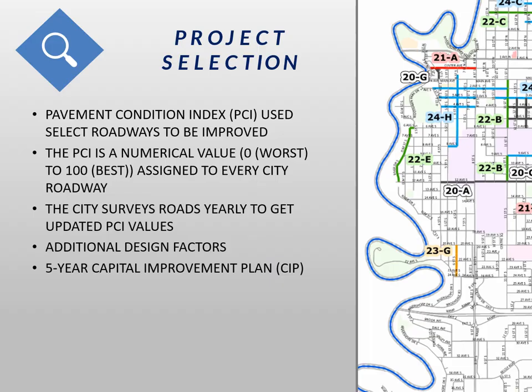You may be wondering how and why your street was chosen for improvements. There are several factors taken into consideration. One significant factor is what we call a pavement condition index, or PCI for short. This allows us to create a value, or a score, as a representation of the condition of a certain road. The PCI is a numerical value with zero being the worst and a hundred being the best — zero would mean no pavement left, and one hundred would mean essentially brand new construction.